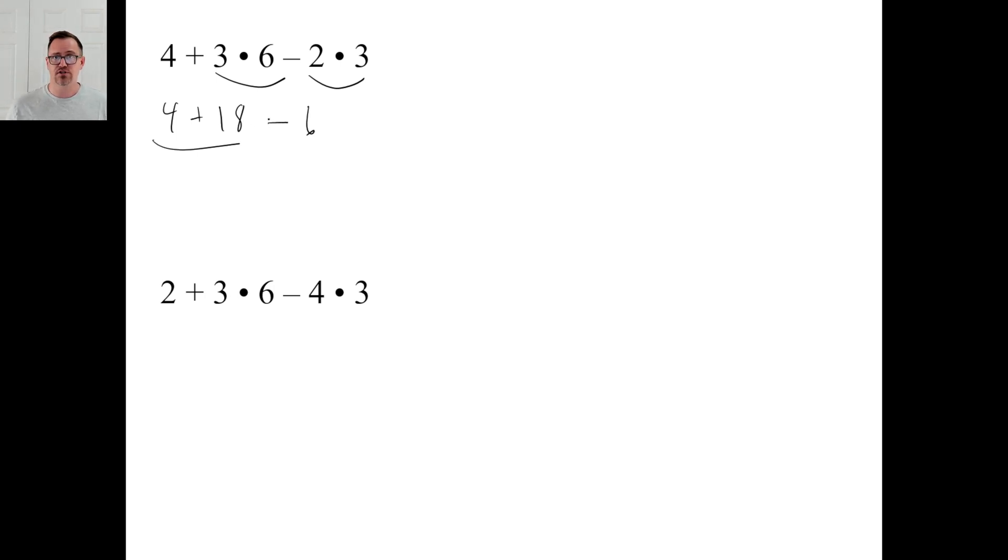And by the way, when you get to this point, you can do it in any order you want, just as long as you keep the numbers together. In other words, you could say 18 - 6 is 12. 12 + 4 is 16. Or you could do 4 + 18 is 22 - 6 is 16. So the answer to A is 16. Pause it and try B.